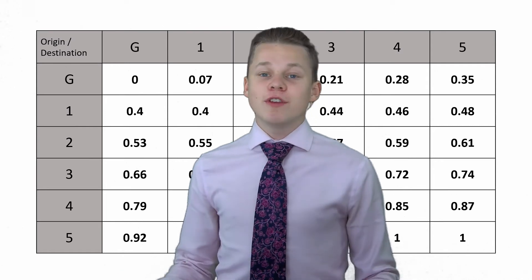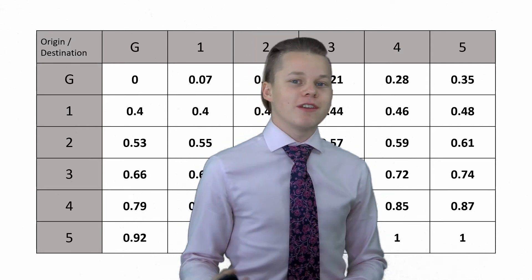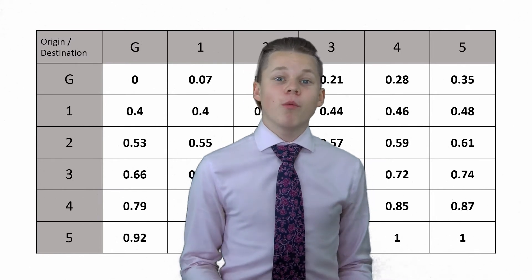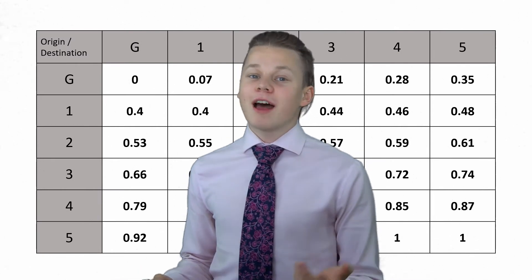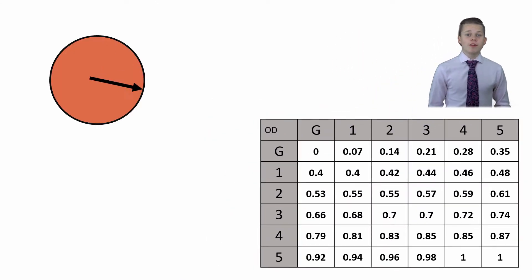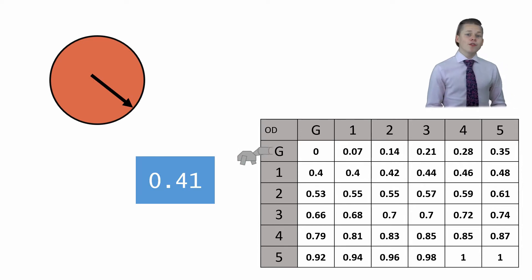We now have a cumulative distribution function of our origin destination matrix and as you can see we finish with the number one because all of the probabilities add up to one. We are now going to pick a random number using a spinner. Now I'm looking for the first element that is greater than or equal to our random value. This gives us an origin of one and a destination of two.